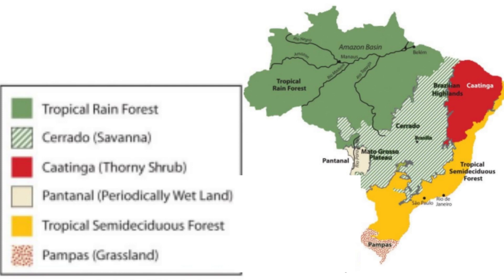To the extreme south is another type of grassland called the pampas, which is found in temperate climates. Other vegetation types in Brazil include a small wetland area to the west, thorny shrub to the northeast, and tropical semi-deciduous to the east. Much of these vegetations, especially to the east, have now been removed and replaced by human settlement.